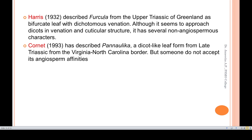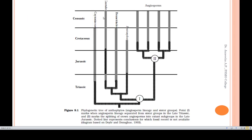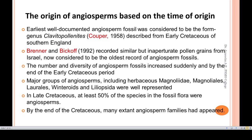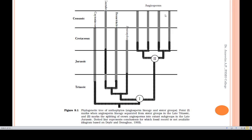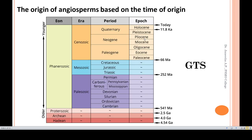So these are the different theories of the origin of angiosperms based on the time of origin. Angiosperms originated during the Cretaceous period of the Mesozoic era. The Mesozoic era is called the Golden Age of Gymnosperms, and it was from this gymnosperm background that the group of angiosperms began to evolve.